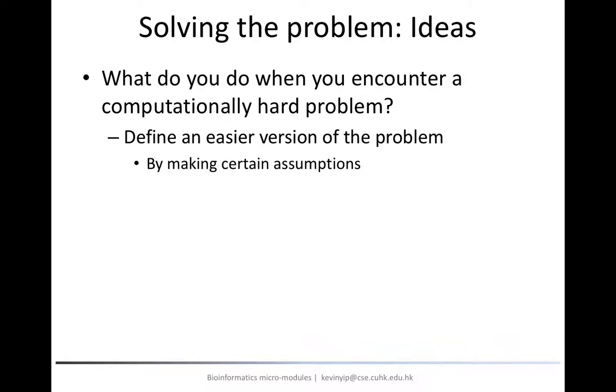The first way is to define an easier version of the problem, for example, by making certain assumptions. An optimal solution to this simpler problem may not be optimal for the original problem, but it could be much easier to obtain.